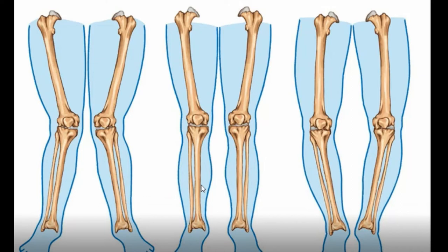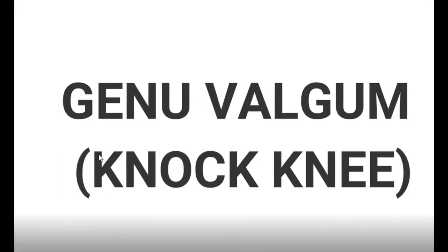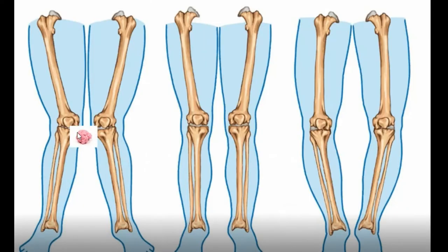Hey guys, welcome. Today I'll be talking about leg deformities. Here we have a normal leg on the left, and a leg that is knocked — we call it knocked knee, and medically speaking we call this genu valgum. I remember it by just thinking about a gum — something sticky.